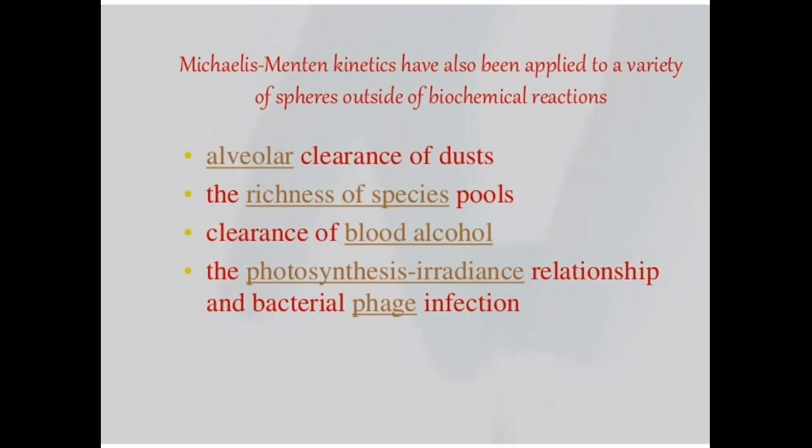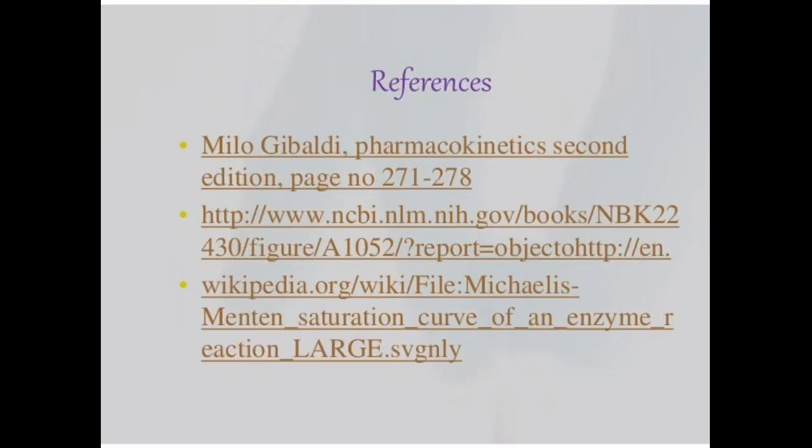Michaelis-Menten kinetics have also been applied to a variety of spheres outside of biochemical reactions: alveolar clearance of dust from lungs, the richness of species pools, clearance of blood alcohol, photosynthesis irradiation relationship, and bacterial phage infections. So these are the different applications of Michaelis-Menten constant.